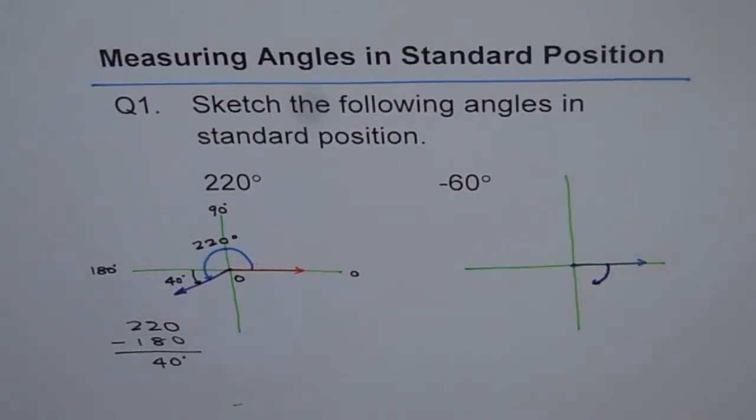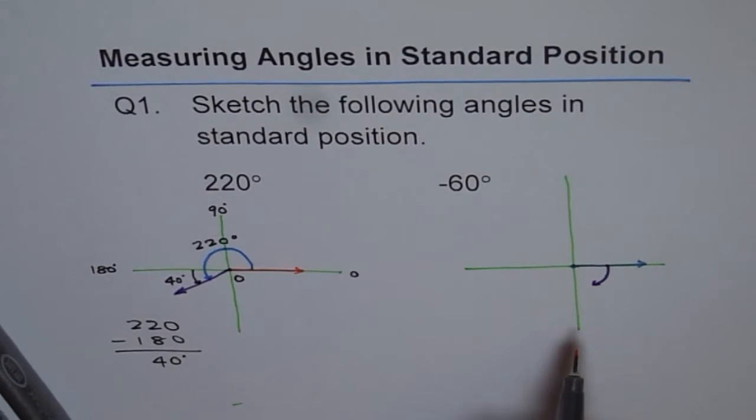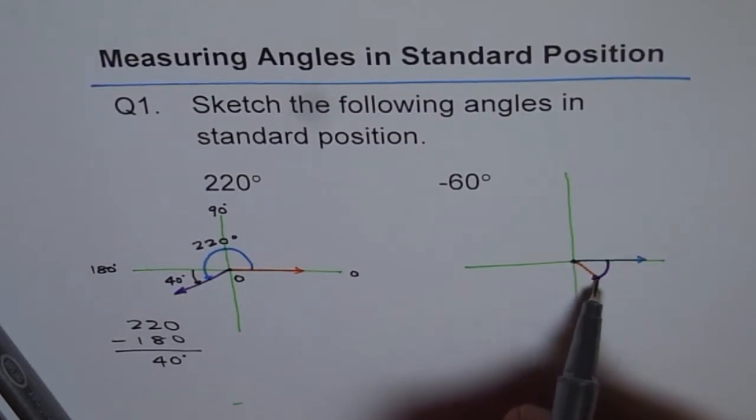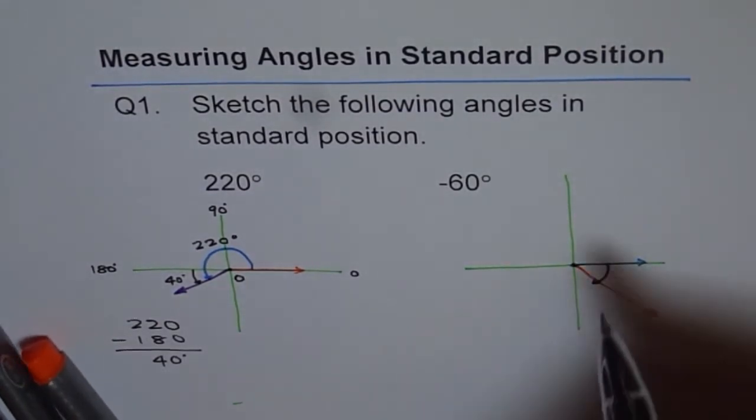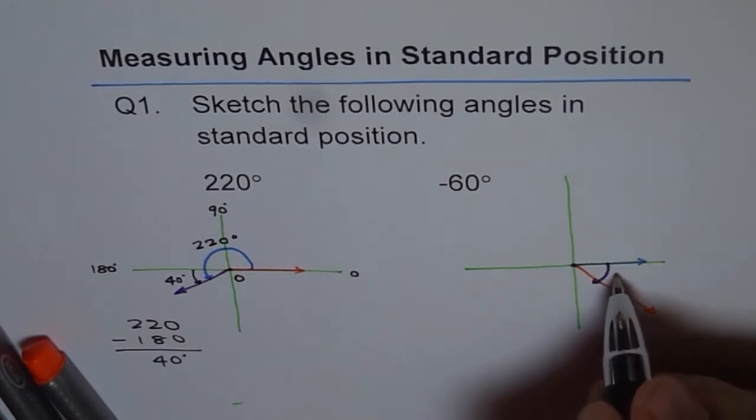We are approximately sketching them. We are not using any protractor for the time being. You can use one. So the terminal arm happens to be here like this and we will label it. Important thing here is to label, and that is 60 degrees.